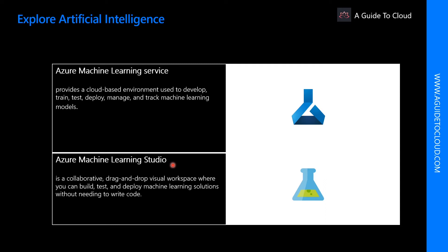Azure Machine Learning Studio is a collaborative drag-and-drop visual workspace where you can build, test, and deploy machine learning solutions without needing to write any code. It uses pre-built and pre-configured machine learning algorithms and data handling models. Use Machine Learning Studio when you want to experiment with machine learning models quickly and easily, and the built-in algorithms are enough for your solutions.